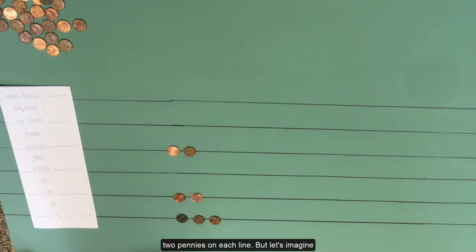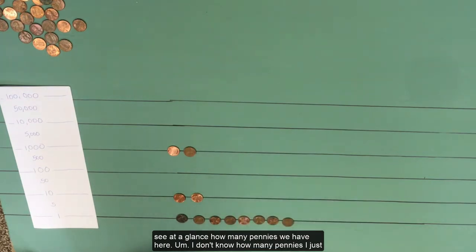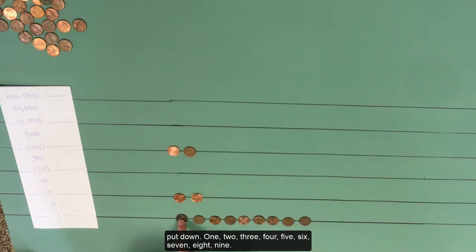And I kept putting pennies on this 1s line. At some point, we're not going to be able to easily see at a glance how many pennies we have here. I don't know how many pennies I just put down. 1, 2, 3, 4, 5, 6, 7, 8, 9. Okay, there's 9 pennies on this line.